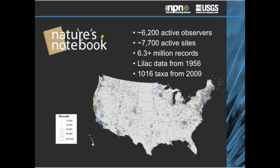To date, Nature's Notebook has amassed approximately 6,400 active observers at about 7,800 active sites across the United States. These data result in 6.65 million status records of information from 1,016 different taxa. Included in the dataset are data from the historic lilac data project established in the 1950s to better understand the onset of spring. Today, the lilac data are used to predict the onset of spring across the nation in a project known as the green wave or spring indices.